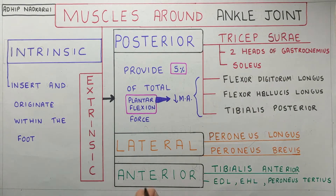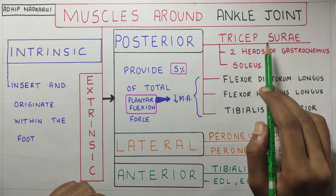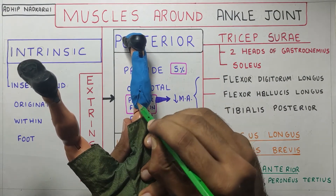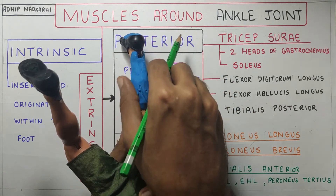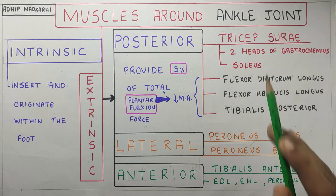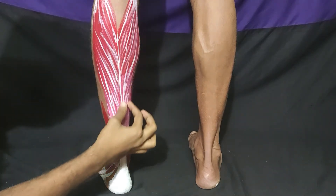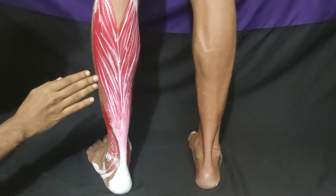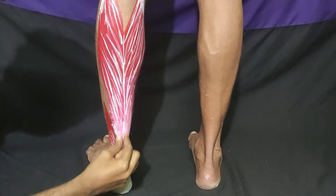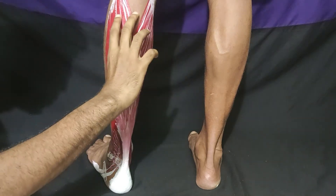Under the posterior compartment there is the triceps surae — a group of muscles consisting of two heads of gastrocnemius and one soleus. The two heads of gastrocnemius connect to the femur, and the soleus is present underneath the gastrocnemius. All three muscles together attach to the calcaneum, the heel bone.